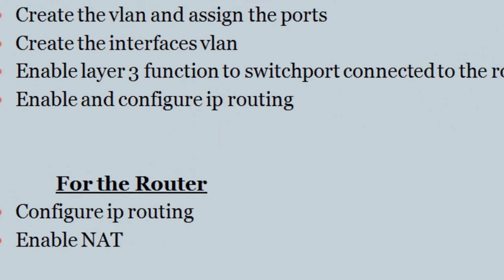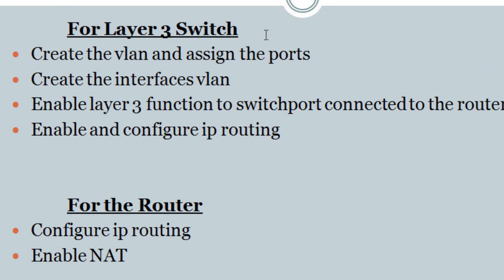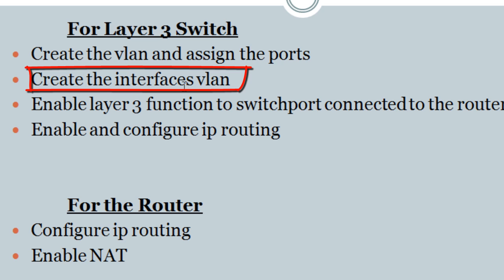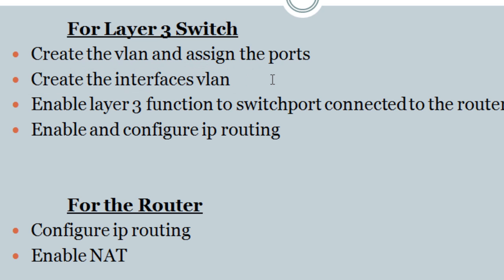Going back to the presentation — so the step-by-step configuration: we created the VLANs and assigned the ports. Now we need to create what we call the interface VLANs, which will be associated to those VLANs, and we're going to give those interface VLANs an IP address.